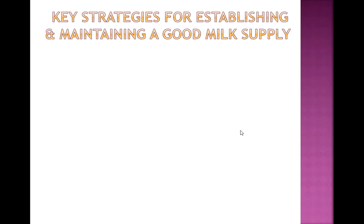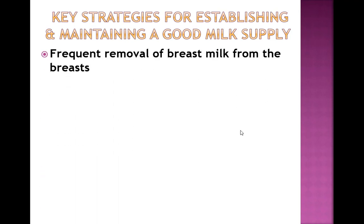Key strategies for establishing and maintaining a good milk supply include frequent removal of breast milk from the breast. For newborns through three to four months, babies need to eat at least eight to twelve times in 24 hours — approximately every hour and a half to three hours. Moms should also avoid all artificial nipples, including pacifiers and bottles. If babies do a lot of sucking on pacifiers, they may satisfy some of their sucking need and not breastfeed as frequently, and sucking differently on a pacifier or bottle can make them less effective at the breast.